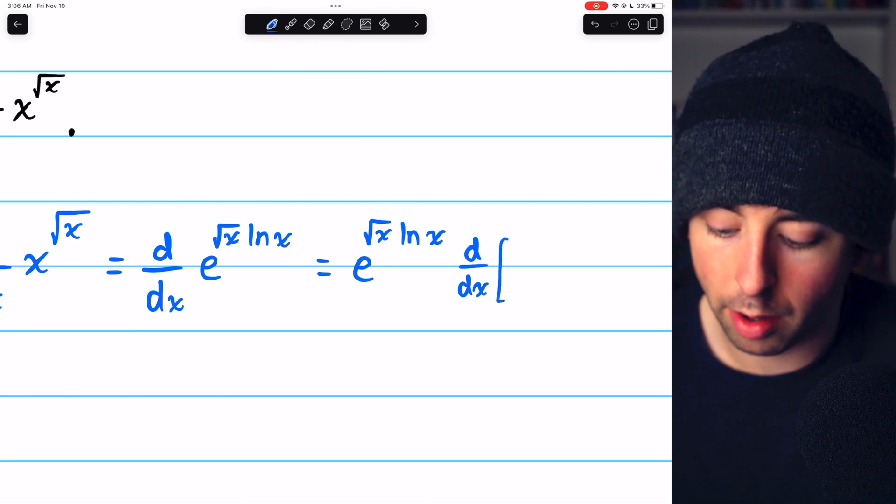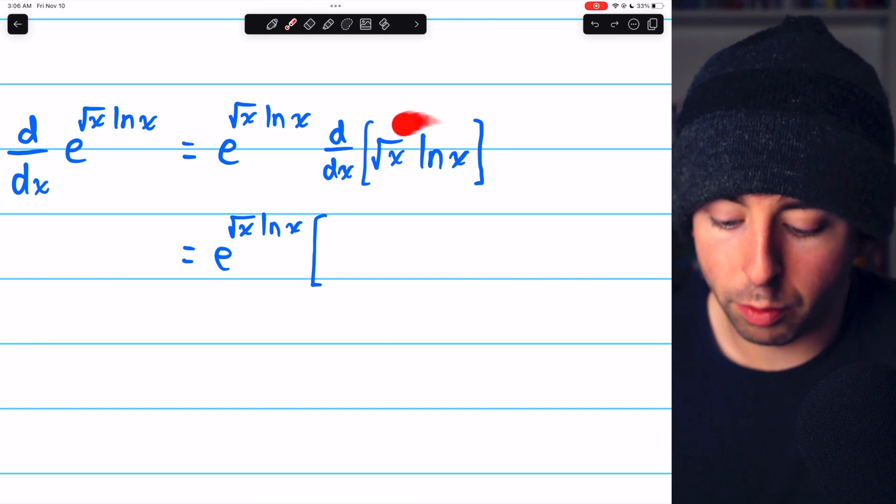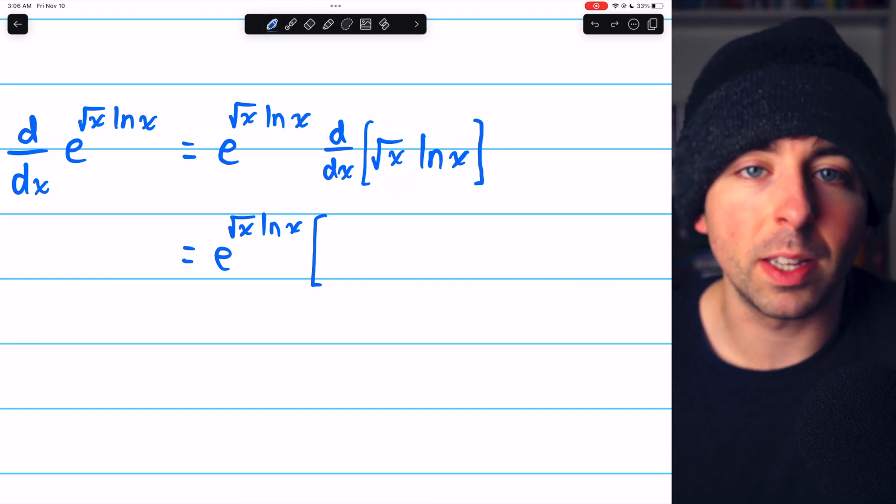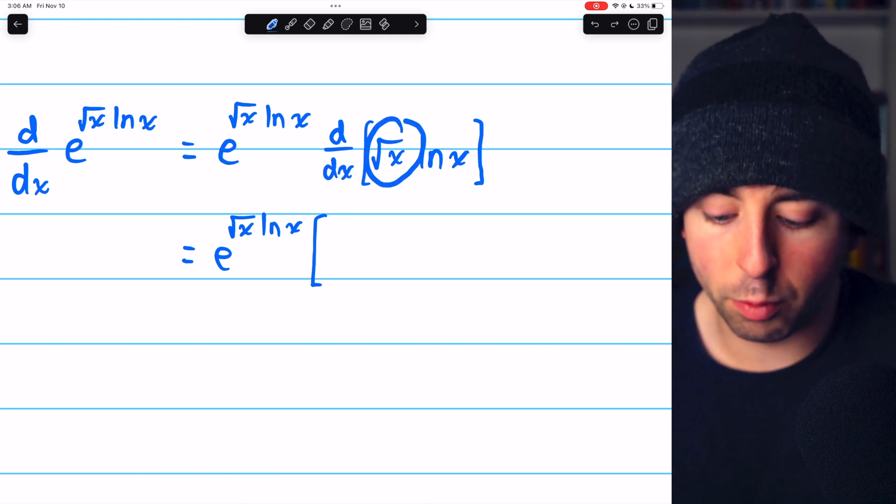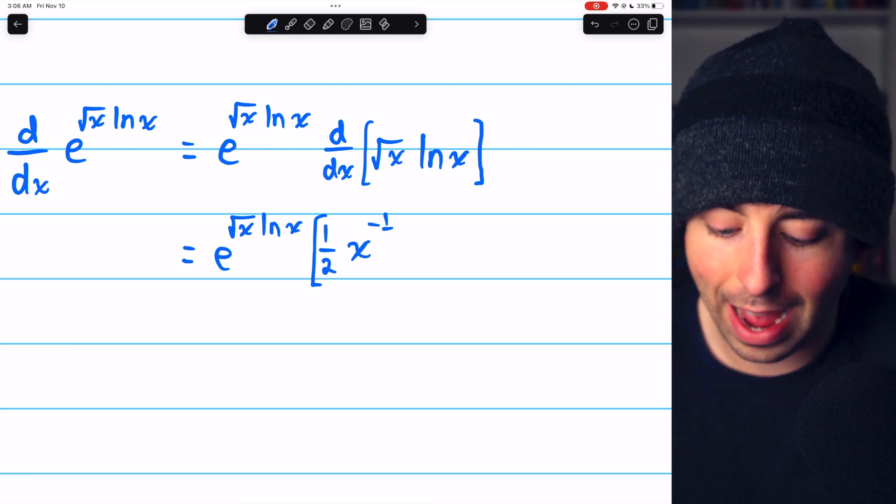So the derivative of root x ln x. We can find the derivative of root x ln x using the product rule, f prime g plus g prime f. If root x is f, then f prime is one half x to the negative half.